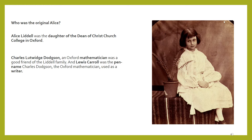Who was the original Alice? Alice Liddell was the daughter of the Dean of Christchurch College in Oxford. Charles Dodgson, an Oxford mathematician, was a good friend of the Liddell family, and Lewis Carroll was the pen name Charles Dodgson used as a writer.